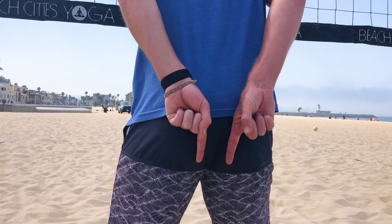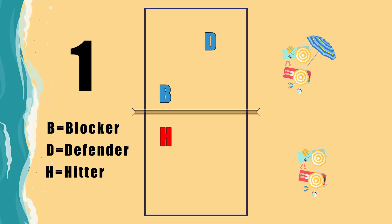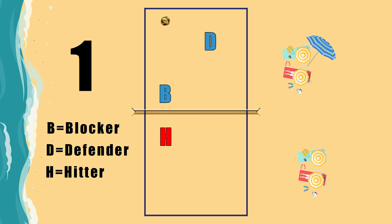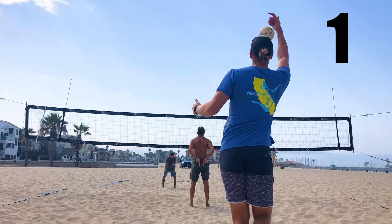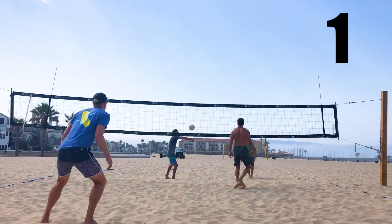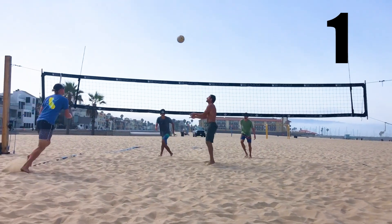The first one we're talking about is line defense — represented by holding up a one, or for easy explanation, a 'line.' If you are the blocker, you are in charge of taking away that attacker's line attack. If they hit a line shot over you, that's something we're willing to give up. Since the blocker is taking the line, the defender has to sit in the cross court. So for a one block or line block: the blocker's responsibility is the line, and the defender's responsibility is the cross.